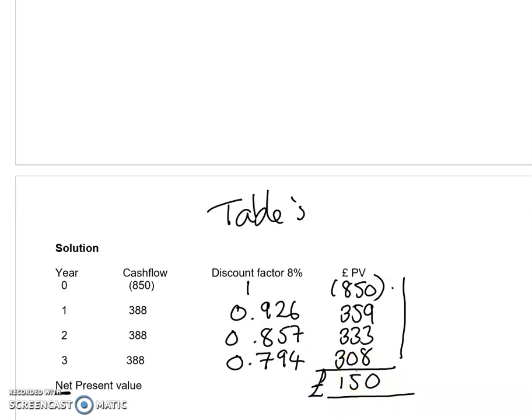If you produce a positive net present value, that means the project is viable. If your net present value is negative, then that project should not be undertaken. Projects with the highest net present value would be preferable to projects with a lower net present value.